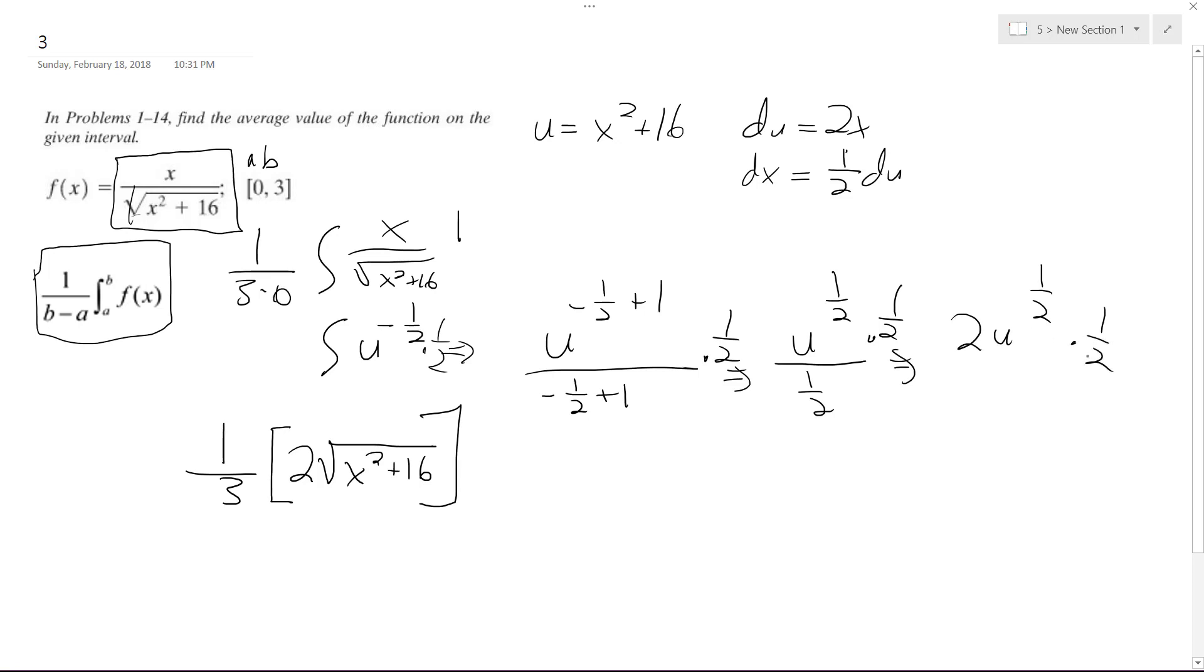So ultimately what we end up with is, it just cancels out, so there's no longer a 2 here. Sorry about that. Alright, so this goes from 0 to 3.